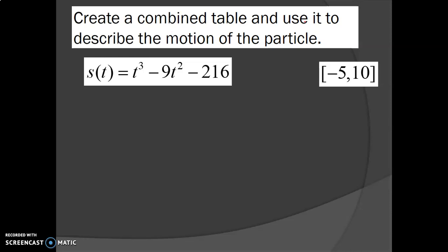We want to create a combined table and use it to describe the motion of a particle. We find the first and second derivatives, find out when they're zero, and set up our table. Assuming this is a position function, the first derivative gives velocity and the second derivative gives acceleration. Setting the first derivative equal to zero: 3t² − 18t = 0 gives 3t(t − 6) = 0, so t = 0 or t = 6. Setting the second derivative equal to zero: 6t − 18 = 0 gives t = 3. These values, along with the endpoints, go into the table.